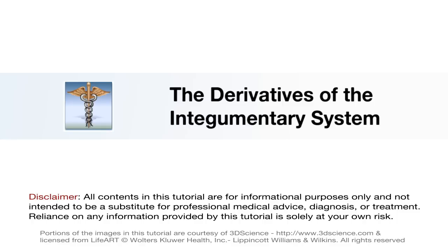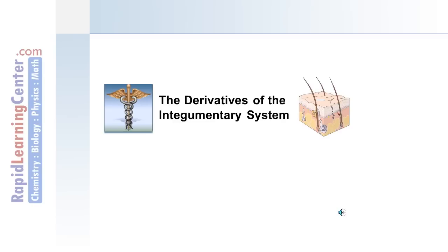The integumentary system includes the skin and its different layers as well as the derivatives. In this section of the tutorial, we'll discuss the derivatives or special structures of the integument, including hair follicles, sebaceous glands, sweat glands, and nails.